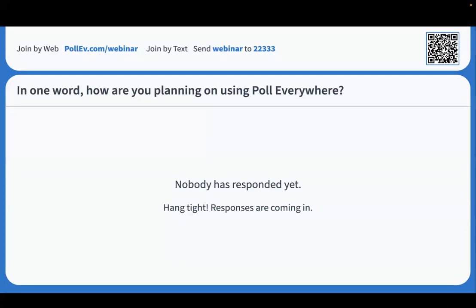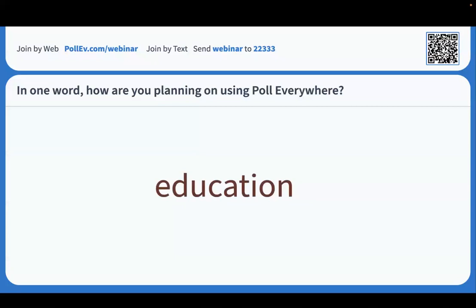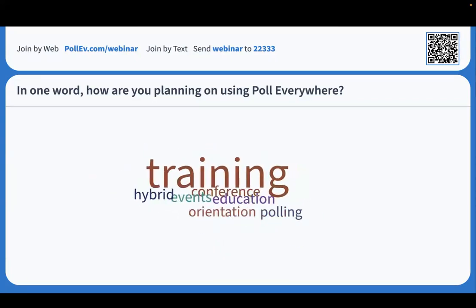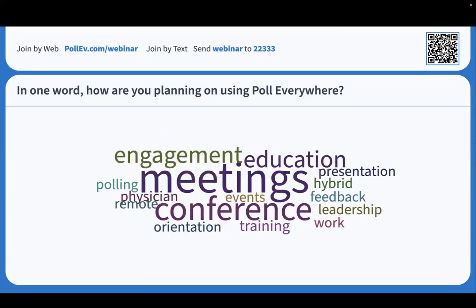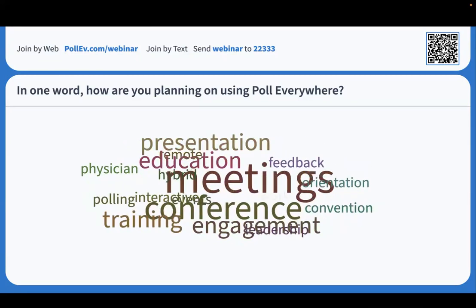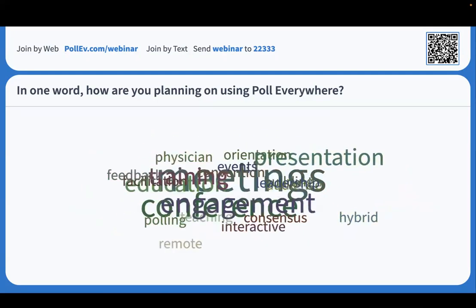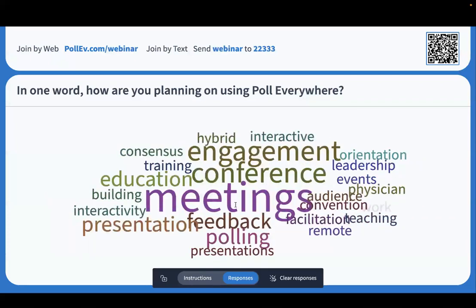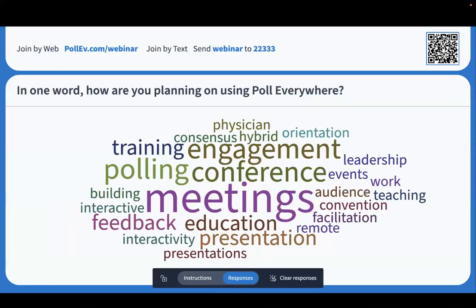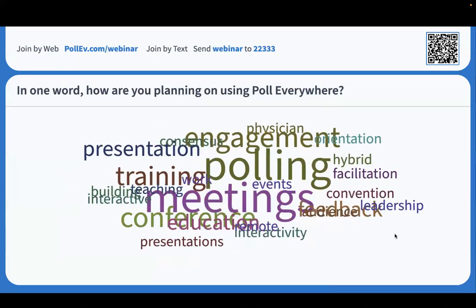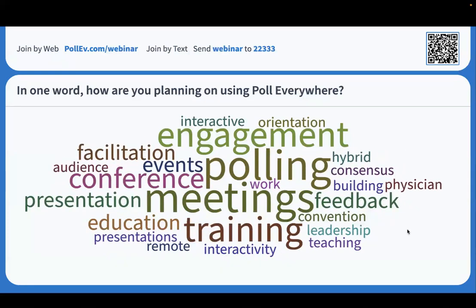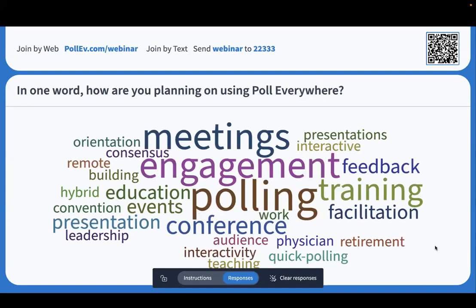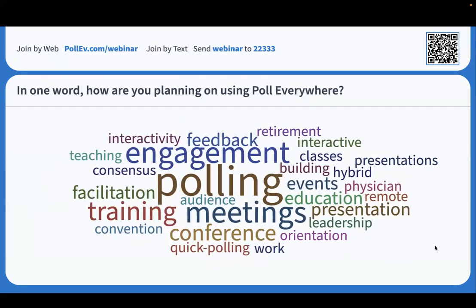Let's go ahead and do a quick warm-up activity so I can get to know you all. In one word, I'd love to know how will you be using Poll Everywhere? I see some answers coming in — this is called a word cloud activity and it's one of my favorite activity types, just for how visual it is. All these different responses are coming in — meetings got really big, and so did engagement. That's because multiple people put in the response 'meeting' or 'engagement' or 'polling.' As you get multiple responses coming in, you see them changing color and growing in size. It's a really cool way to see all of your feedback in one easy-to-read map.